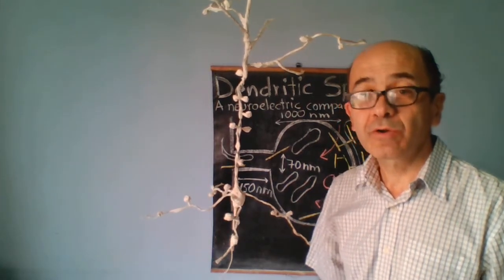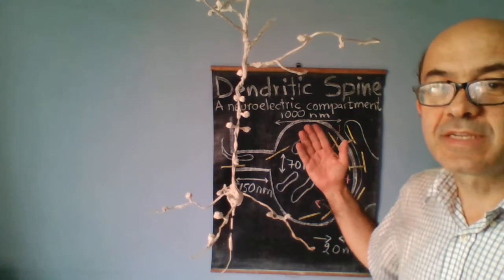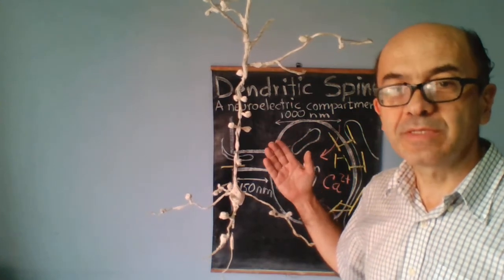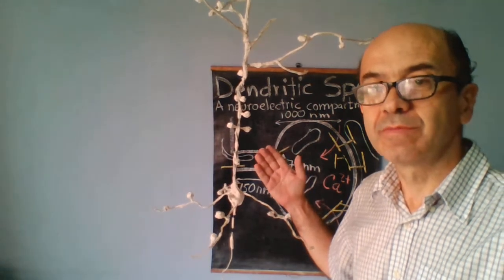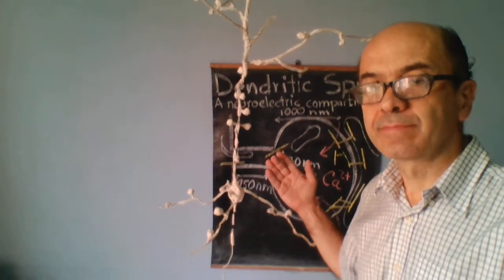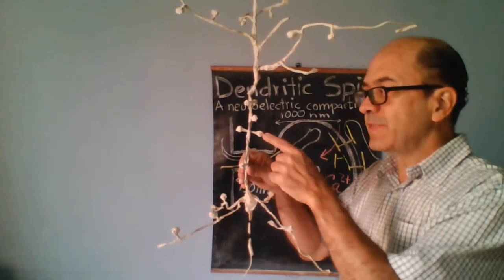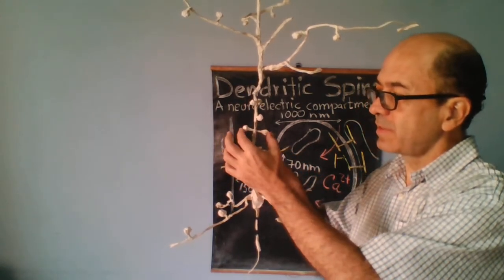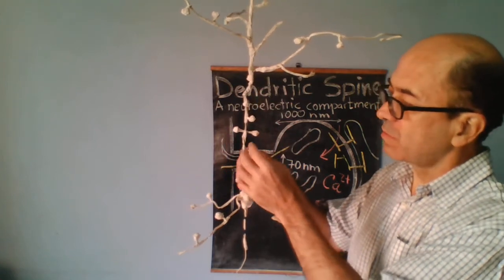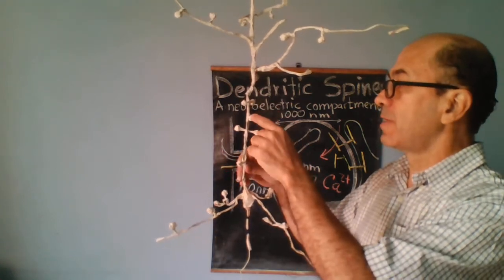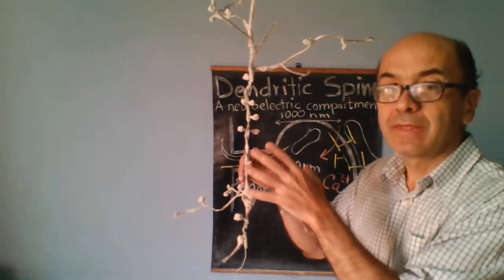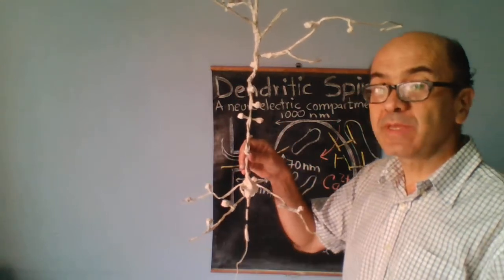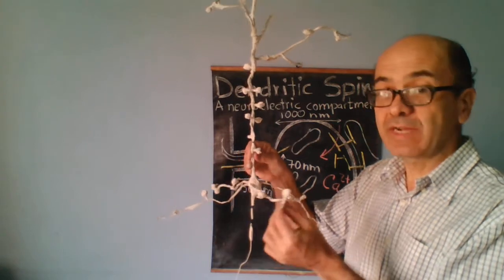Hello, we are going to talk about the dendritic spine, a neuroelectric compartment of neurons. These are dendritic spines. Here they are opposing one to each other. And we can see that dendritic spines can be in all kinds of dendrites.